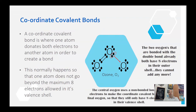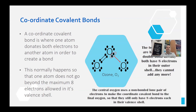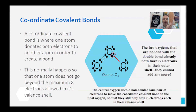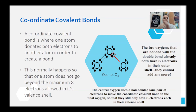Now we move on to coordinate covalent bonding. Coordinate covalent bonding occurs when you have an atom that cannot expand its octet. Anything in period three can have up to 18 electrons in its outer shell — that's an expanded octet — but if you're in period two you can only have eight electrons. Normally a covalent bond forms by overlap of electron shells where each atom brings one electron, but sometimes that would give too many electrons in the outer shell.